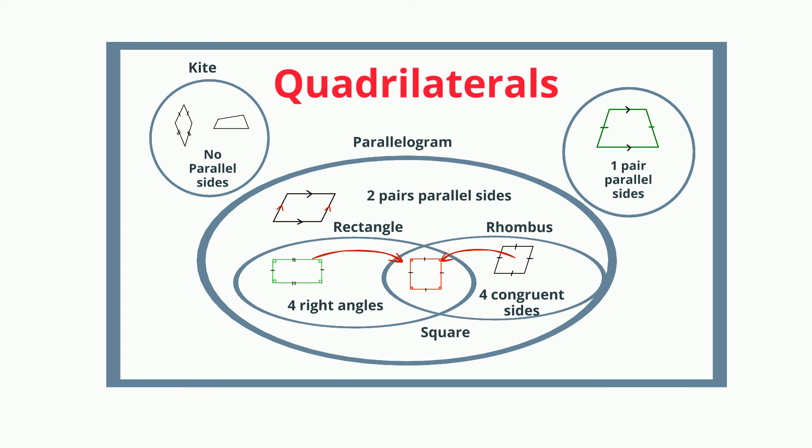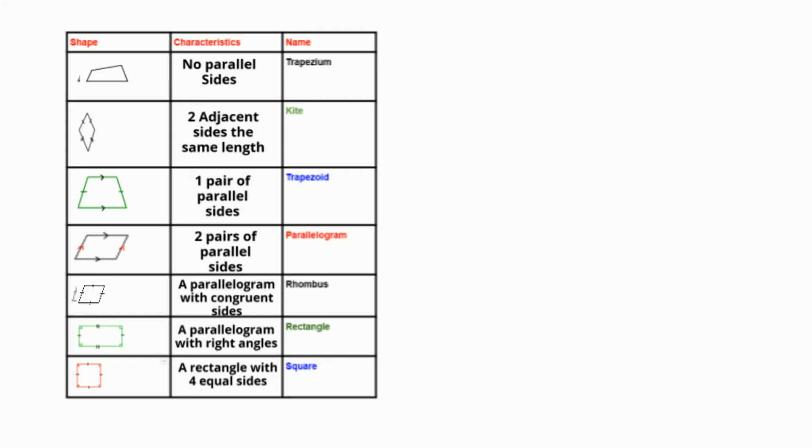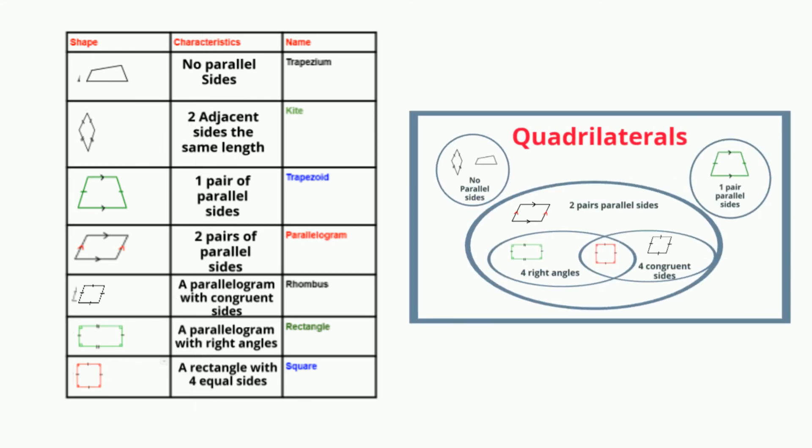So, in summary, you can look at it using this chart, and as you move down the chart, it gets more specific. Or you can use a Venn diagram. I hope that helps in classifying quadrilaterals.